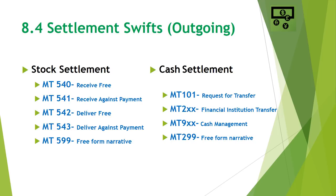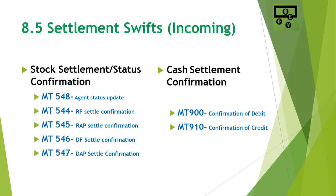MT101 is a request for transfer, where the sender or payer sends this message to his custodian or bank to debit his account and credit a specified account. MT2XX messages are used where financial institutions request the transfer. MT9XX are cash management relevant messages where cash management can send messages out or receive messages from the custodian on cash status. MT299 is a free format SWIFT message similar to MT599 where the sender can write a text message to the custodian authorizing a payment — the key difference being MT299 is used for cash free-form narrative while MT599 is used for stock free-form narrative.